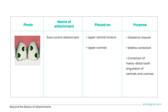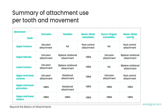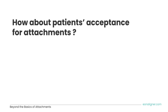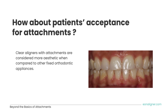Here is a useful table summarizing the most common movements in orthodontics and the attachment needed for each specific tooth. When talking about attachments, we must consider patient acceptance. A patient seeking clear aligner treatment as a transparent orthodontic alternative might be hesitant to have anything bonded to their teeth. However, emerging evidence suggests that clear aligners with attachments are considered more aesthetic when compared to other fixed orthodontic appliances.